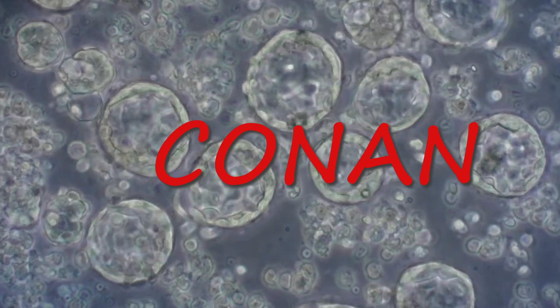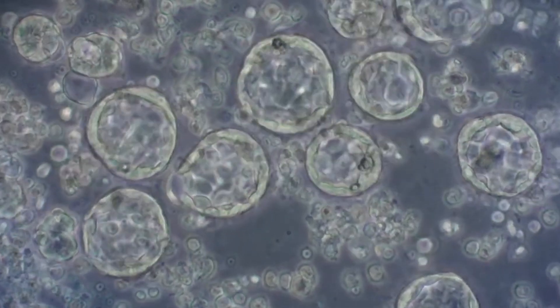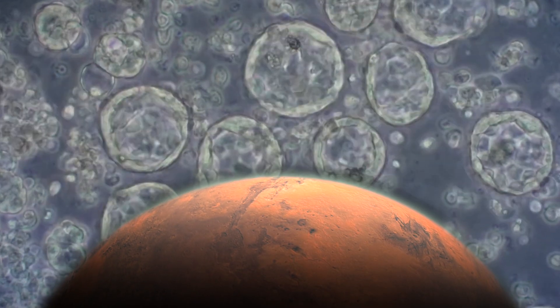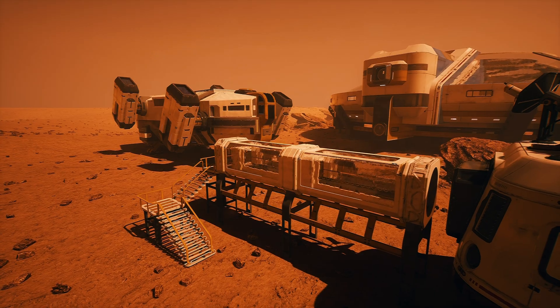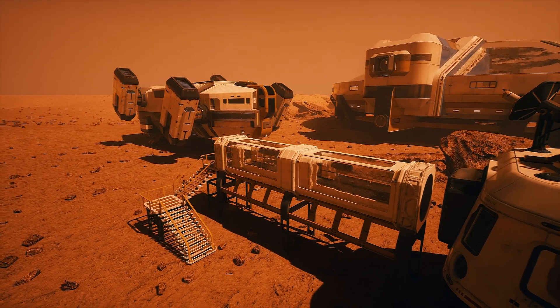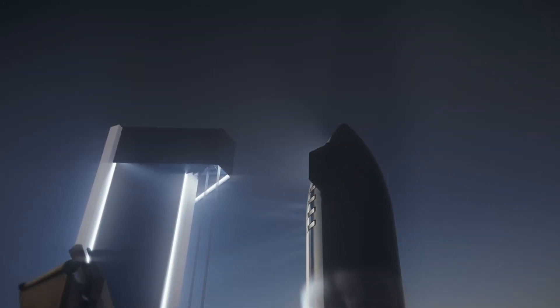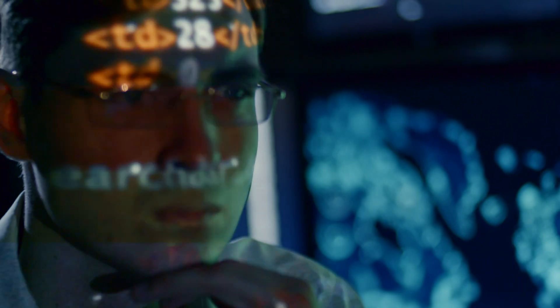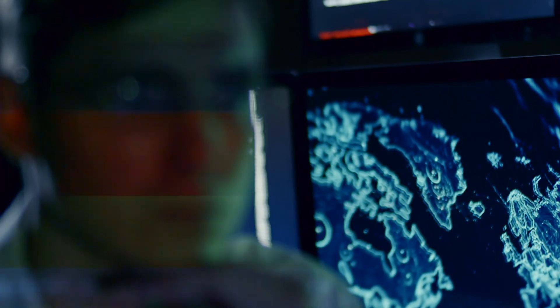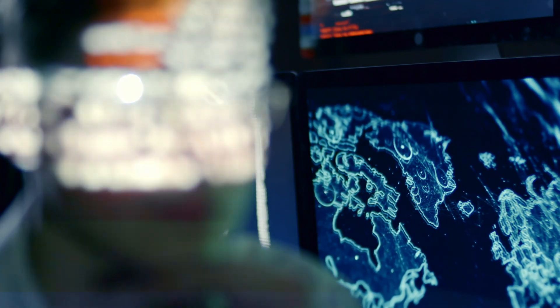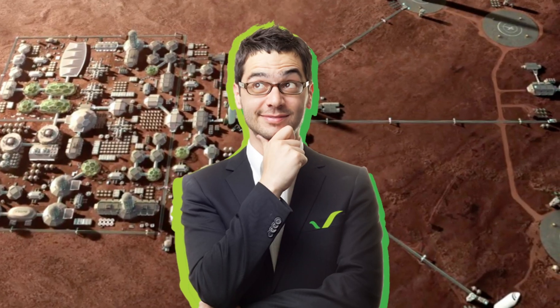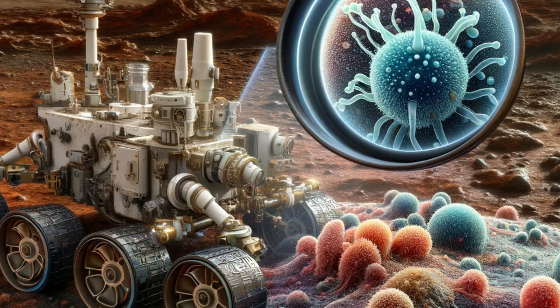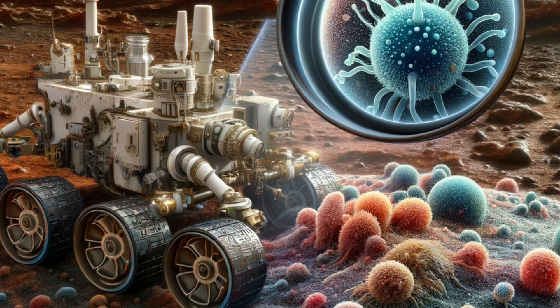Looking ahead, if Martian microbes like Conan were conclusively identified as indigenous to Mars, it would open new chapters in the human quest to explore and understand the universe. It would likely accelerate efforts to send crewed missions to Mars, a goal SpaceX and international space agencies have been working on. The presence of such life would also raise profound questions about the ethical implications of human colonization of Mars. How do we coexist with Martian life? What measures do we take to protect and preserve these alien ecosystems?